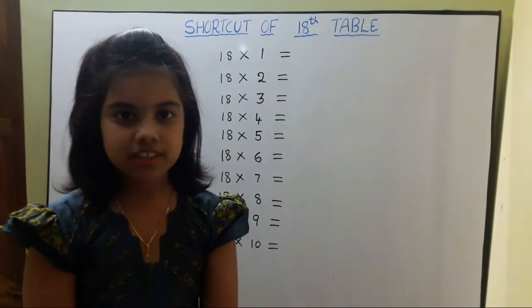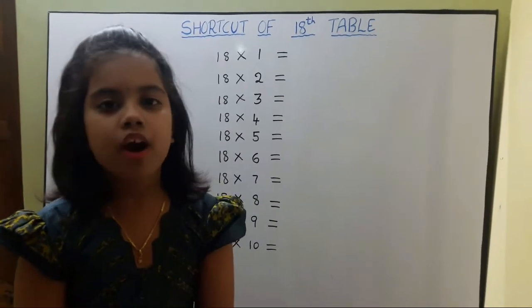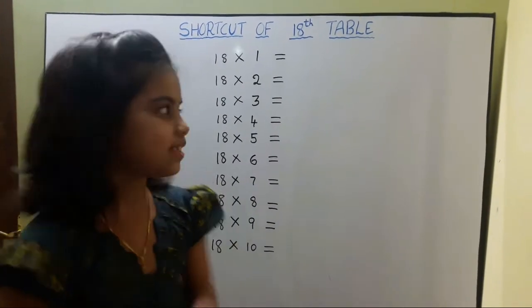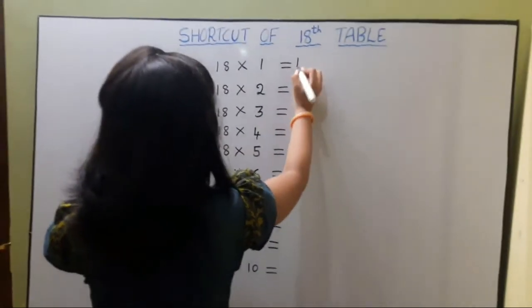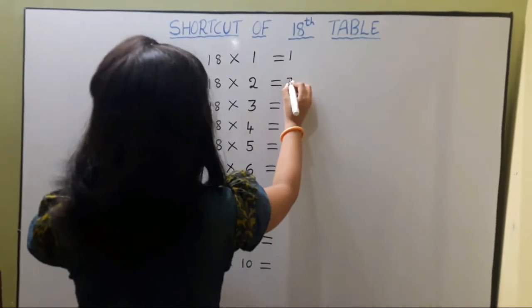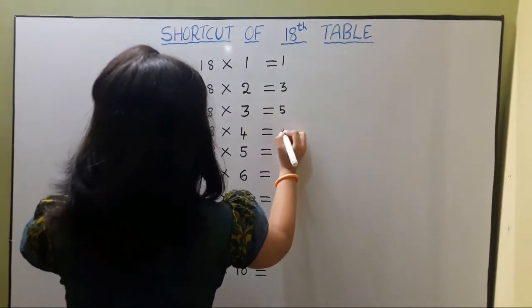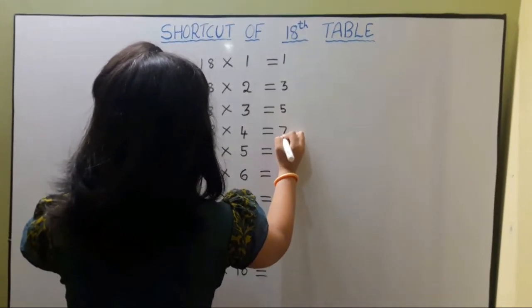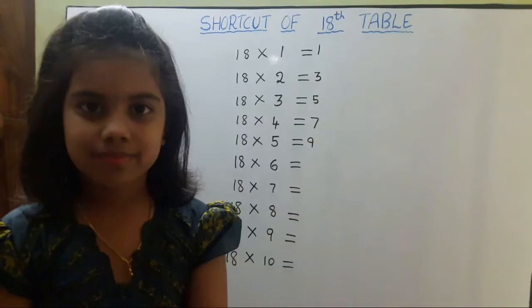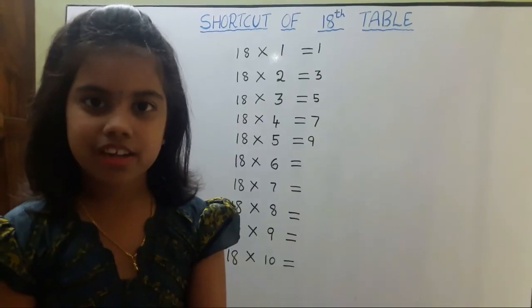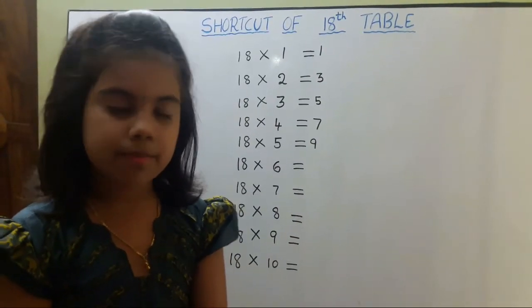First we should write up to down 1 to 9 odd numbers. Next we continue 10 to 18 even numbers.